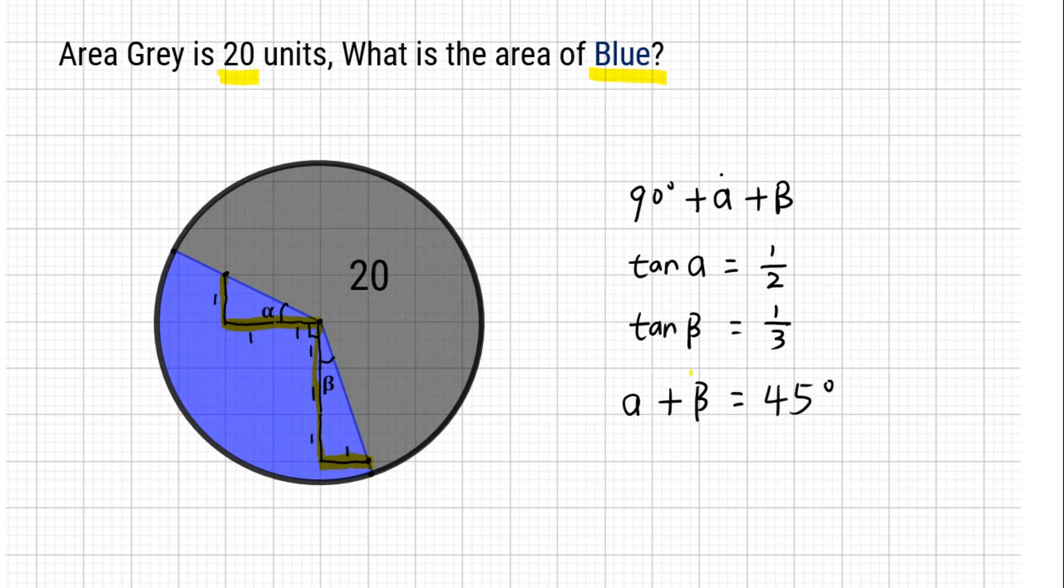The angle of the blue sector is 90 degrees plus 45 degrees equals 135 degrees.